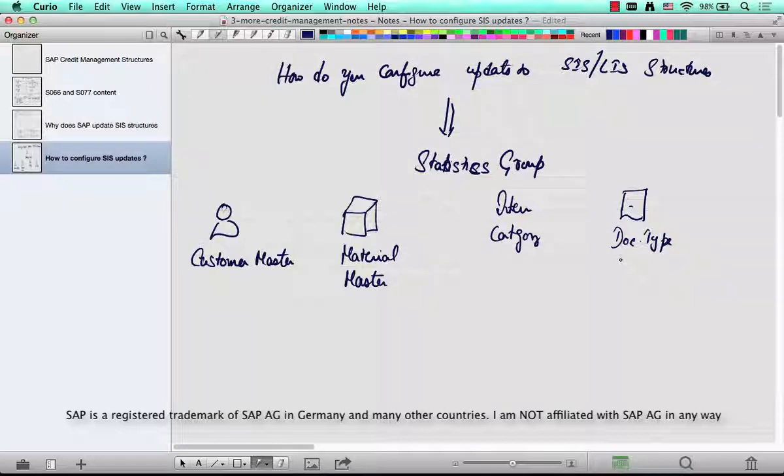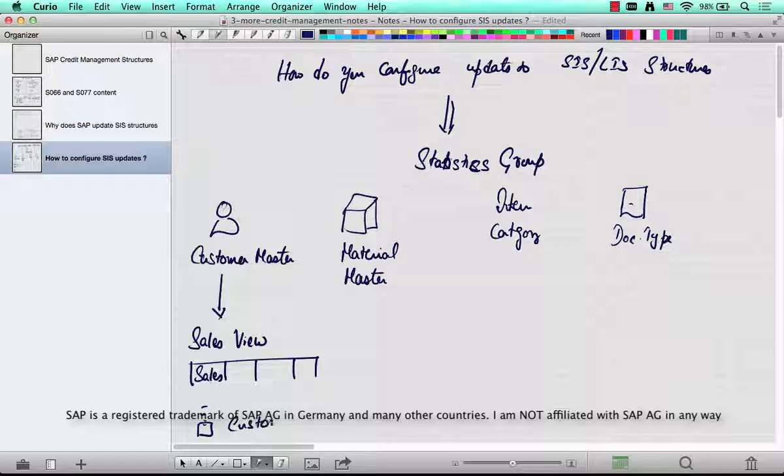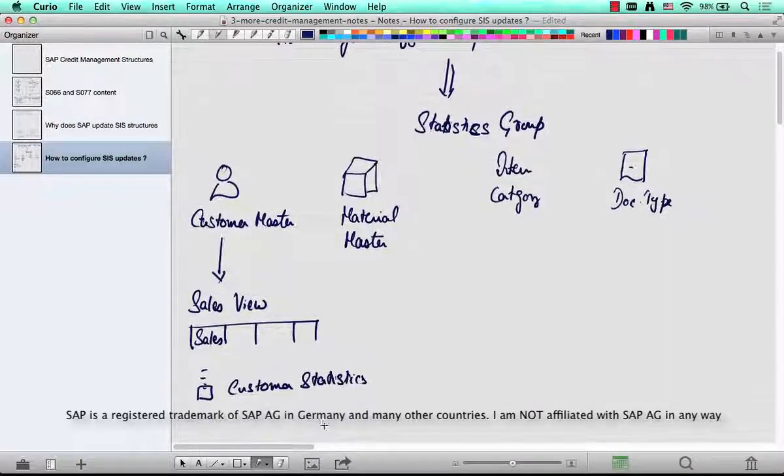So if you go to the sales view and in that there are four tabs right? Sales, shipping, billing, partners. Go to the sales tab and all the way down below you see a drop-down called customer statistics group.